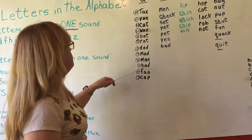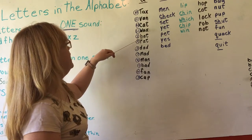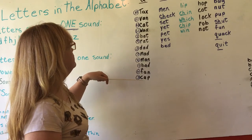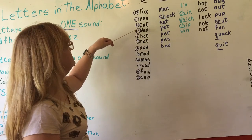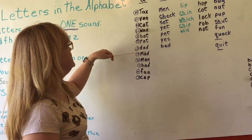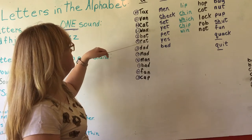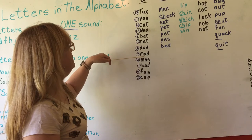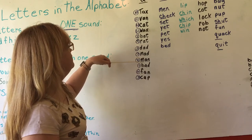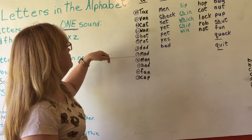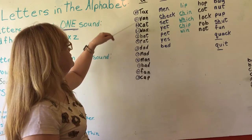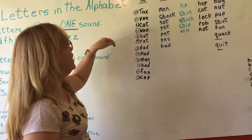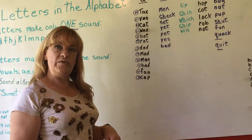They are all in alphabetical order. We have: bad, bat, cap, cat, dad, fan, mad, man, rat, tax, van, and wax — there in alphabetical order.